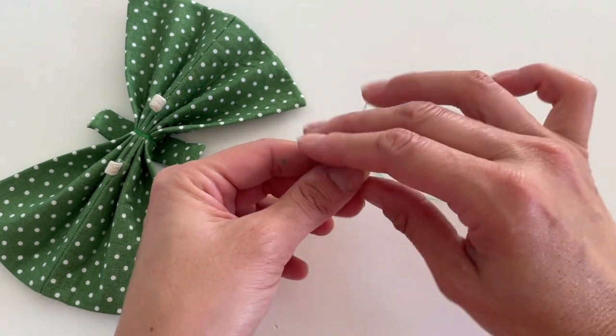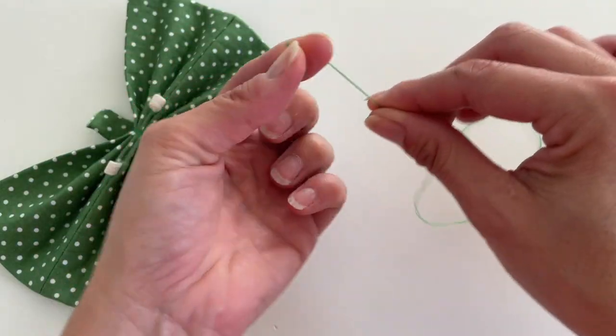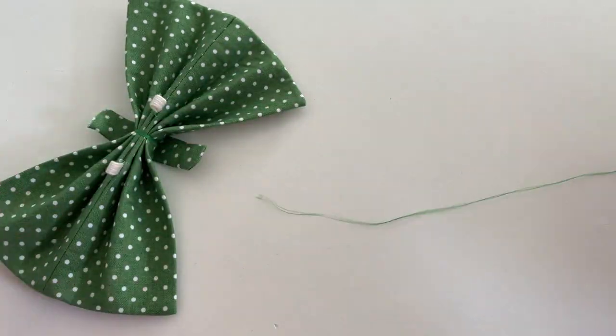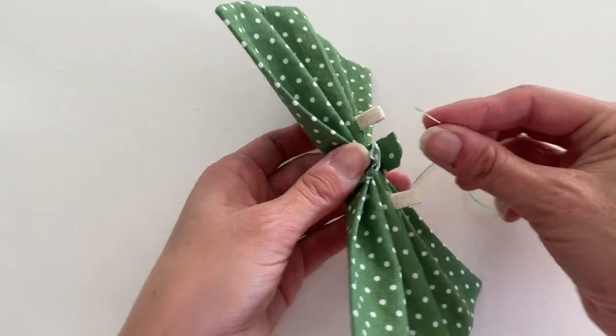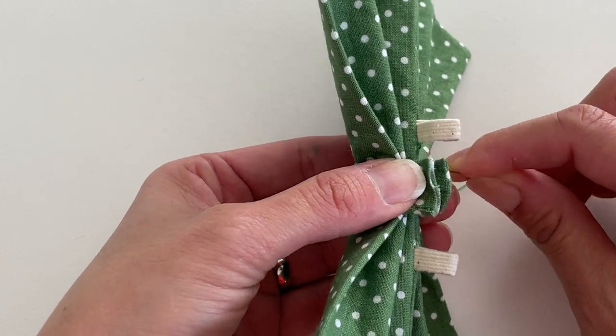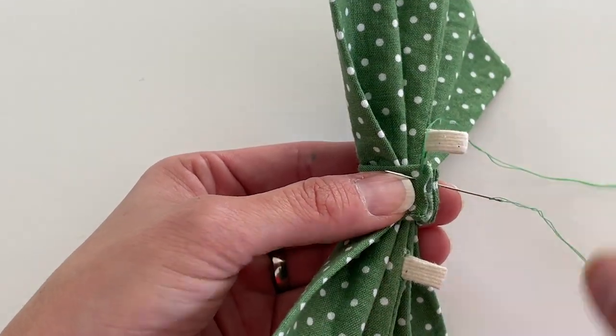I've got my needle. I've threaded it and tied a knot in the ends of the thread. I've just taken the two ends, looped them around my finger and knotted it that way. And then I'm going to take my bow, my bow center here. And I am just going to whip stitch the two ends together.